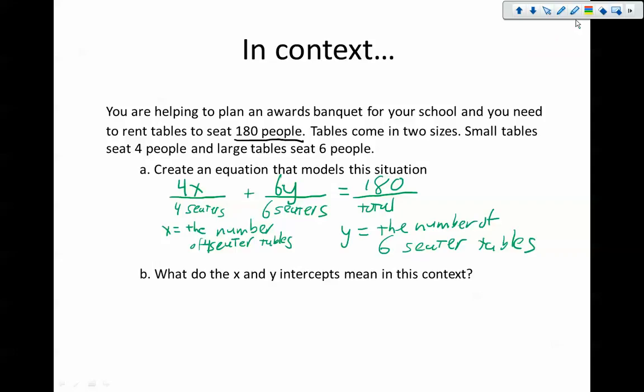There's my situation that represents this. Four times the number of four-seater tables plus six times the number of six-seater tables tells me the exact number of combination of four and six-seater tables that I need to seat 180 people. So there I've got my equation. Now part B says find the X-intercepts. Actually, it says what do the X-intercepts mean in this case? Well, if I were to say that X equals zero, what does that mean? That means that I have no four-seater tables.